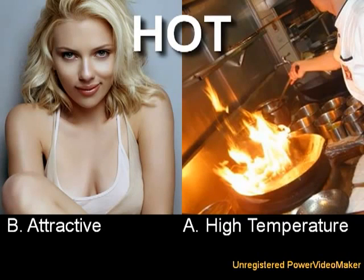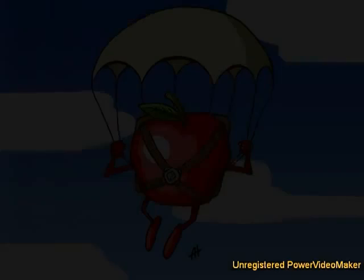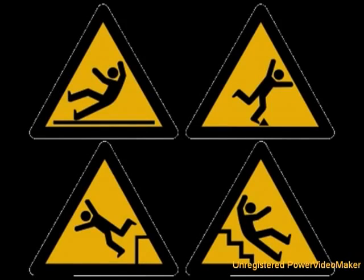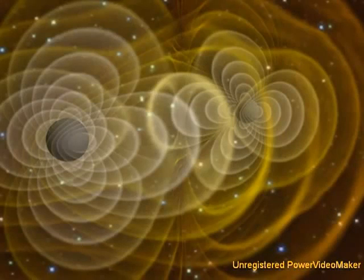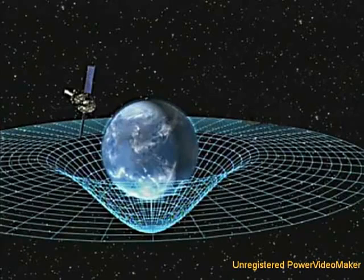If you're a bit confused as to how something can be both a theory and a fact, remember that words can have more than one meaning. Just like evolution, the word gravity is both theory and fact. It is a fact that objects fall — objects with mass gravitate towards one another, and that has been directly observed. The theory of gravity seeks to explain why objects with mass attract one another. Currently, Einstein's theory of general relativity, which proposes that objects with mass warp the fabric of space-time, is the best explanation we have for all the observed facts.